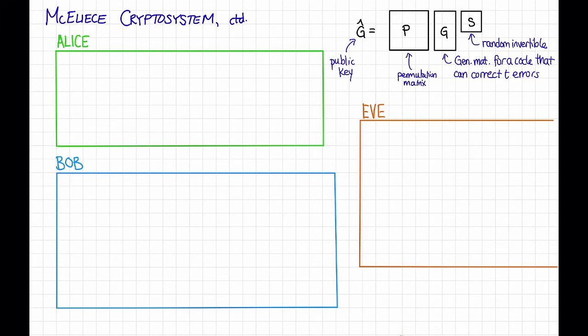So here's what all the parties are going to do. For Alice to send a message X to Bob, Alice is going to first choose a random vector, E, in F2 to the N, that has weight T.